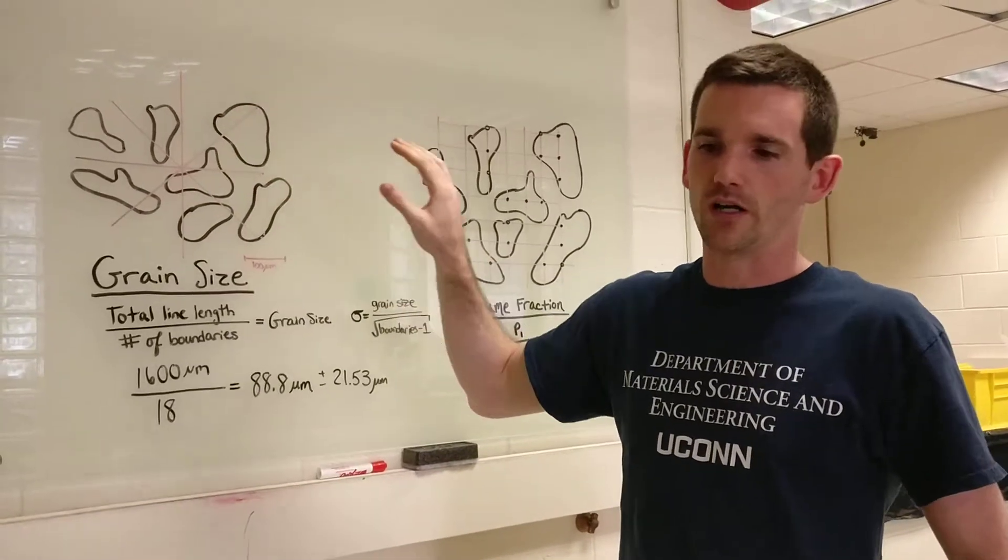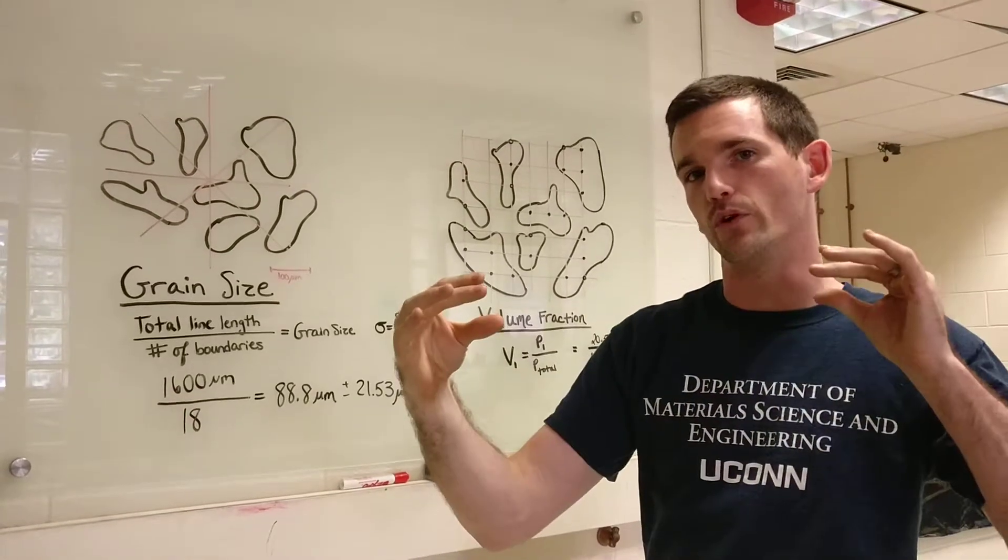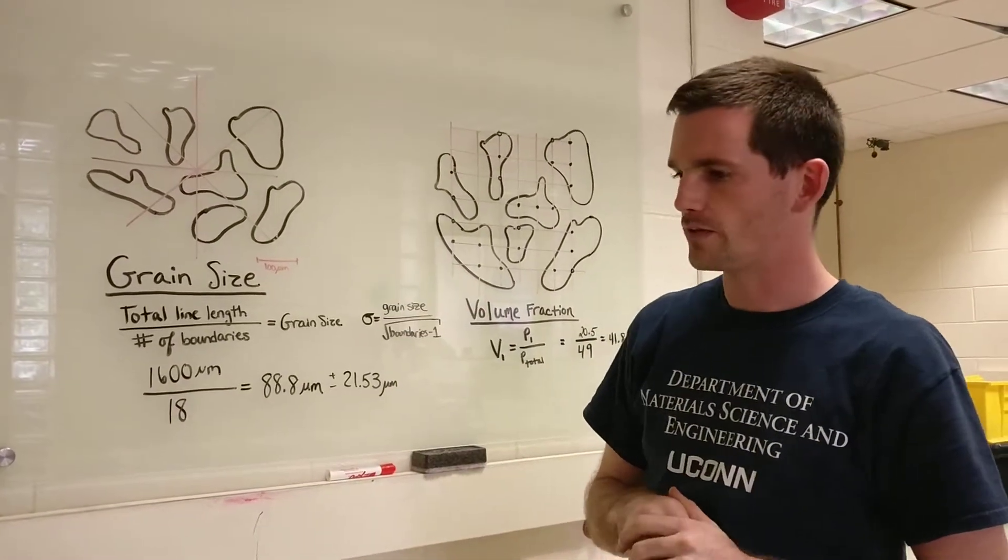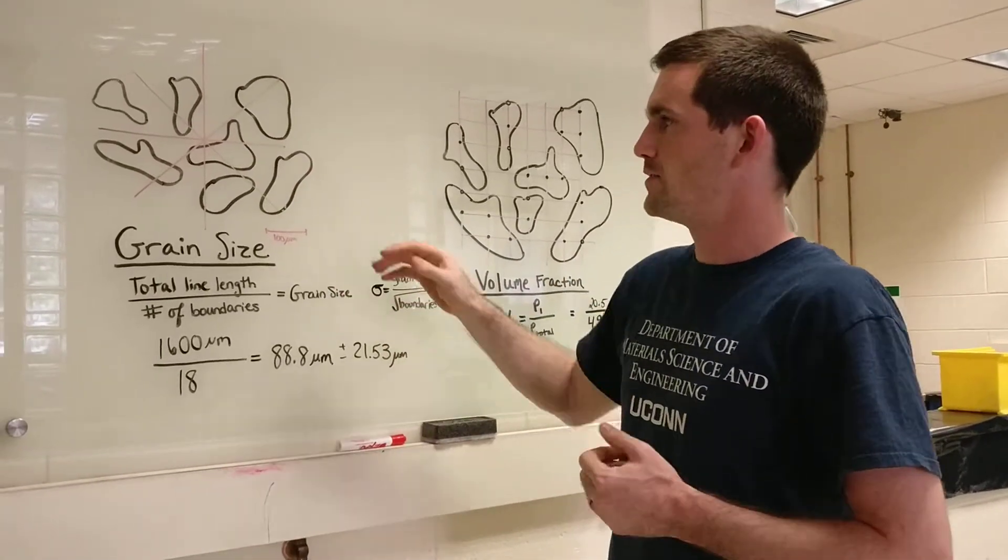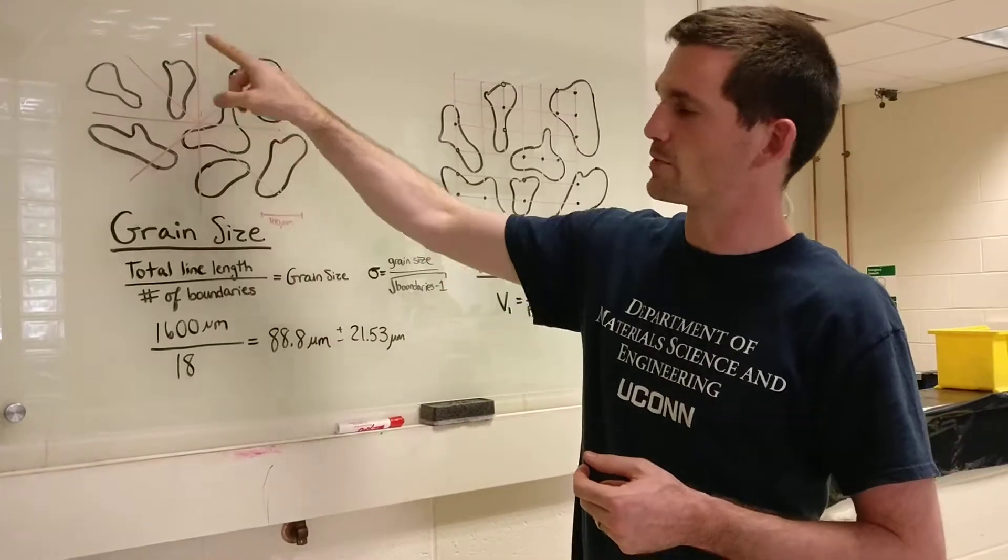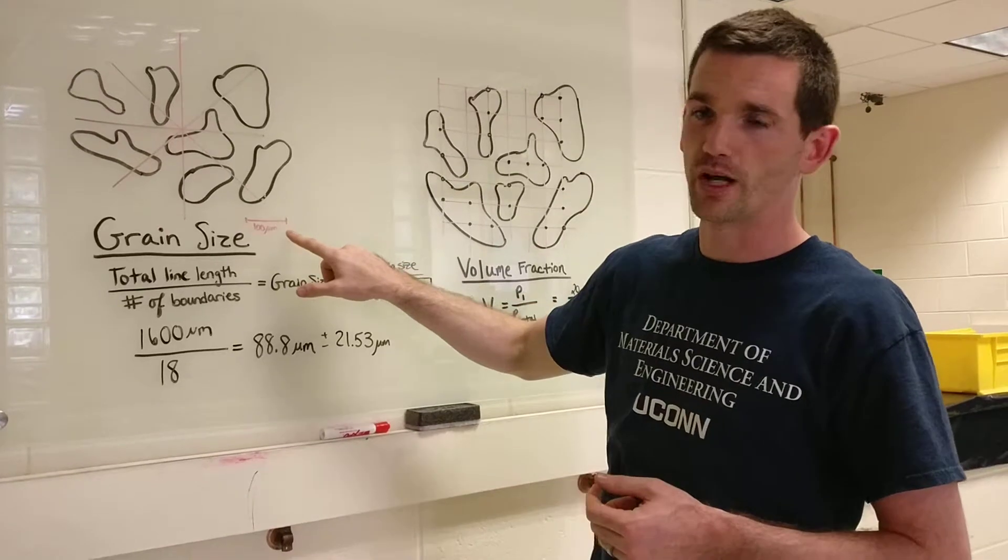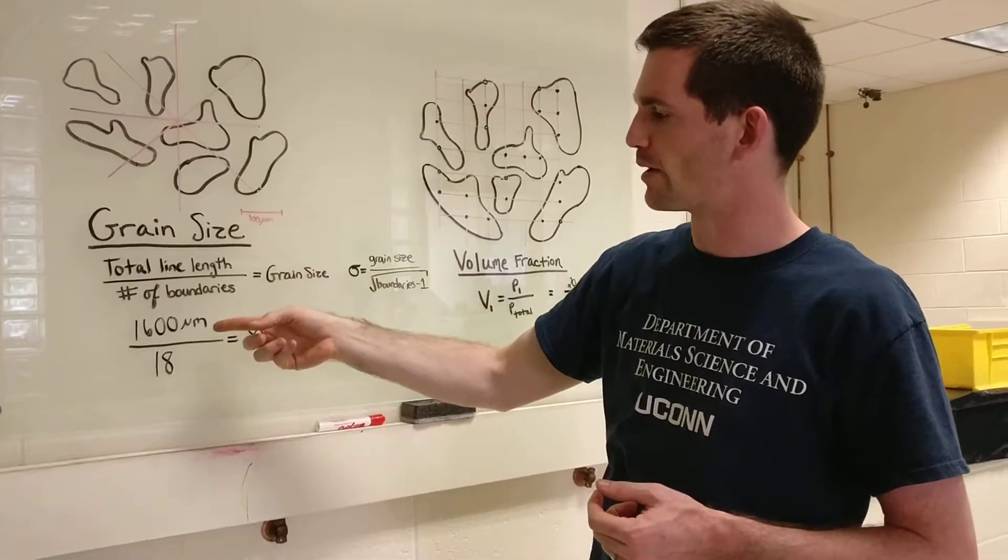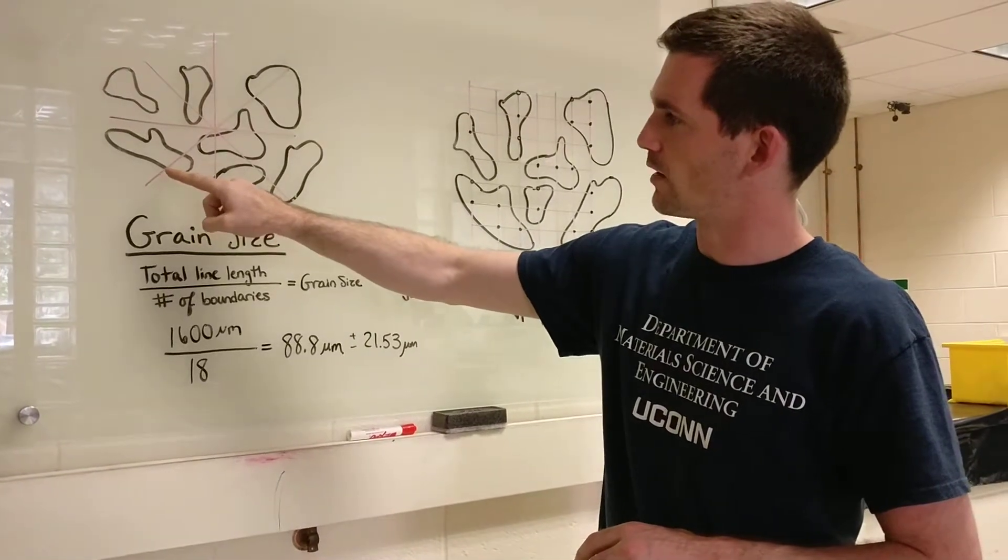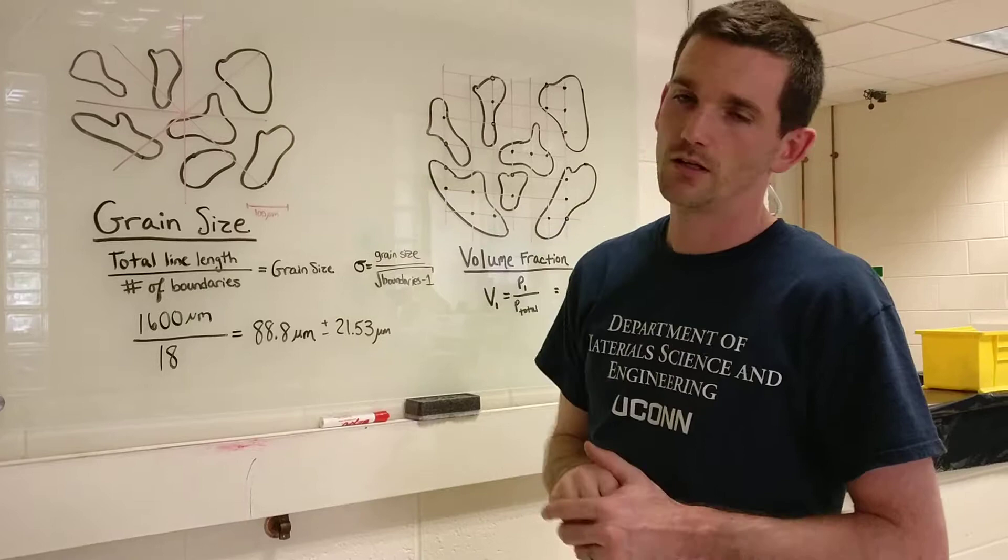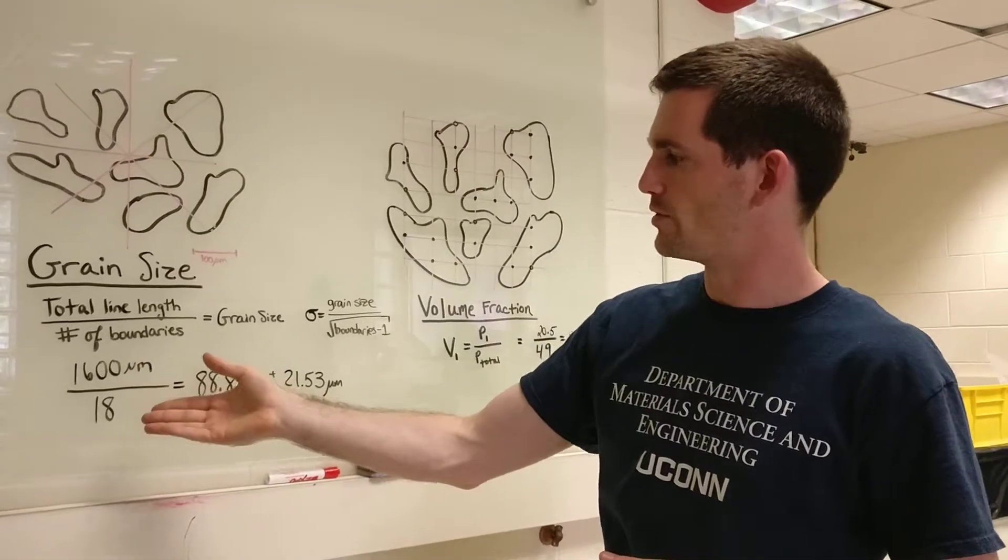We do this in every direction because we are canceling out if grains have an orientation. Say if you rolled them and they're long in one direction, then if we measured all lines in one direction the grains would seem bigger than they actually are. The way we measure it is by summing up the total length of these lines. We approximate these four as being 400 microns each, so we say that's 1600 microns total. We counted the boundaries for all these lines together like 1, 2, 3, 4, 5, 6.